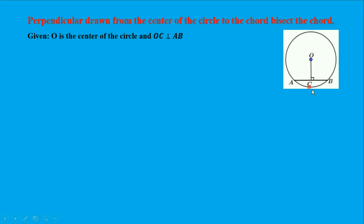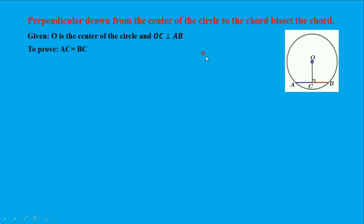This is a statement related to the circle, for class 9 math. That means AC equals BC. Given: O is the center of the circle and OC is perpendicular to AB. Our thing to prove is AC equals BC.